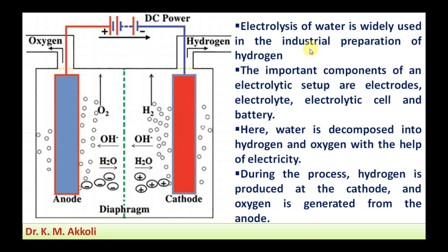The electrolysis of water is widely used in the industrial preparation of hydrogen. The important components of the electrolytic setup are: electrodes, electrolyte, electrolytic cell, and the battery. Water is decomposed into hydrogen and oxygen with the help of electricity, which breaks the bond between hydrogen and oxygen. Hydrogen is produced at the cathode and oxygen is generated at the anode.